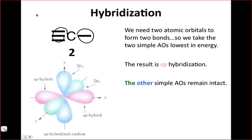To get two hybrid orbitals, we take the four simple atomic orbitals. We need two orbitals out, so we put two orbitals in. We pick the lowest energy simple atomic orbitals, which would be the 2s and one of the 2p's. Remember, we only need two hybrid orbitals out, so we only take two simple atomic orbitals in.